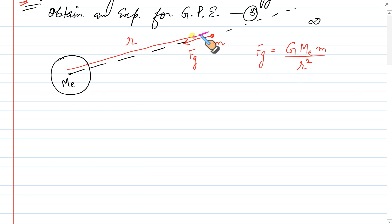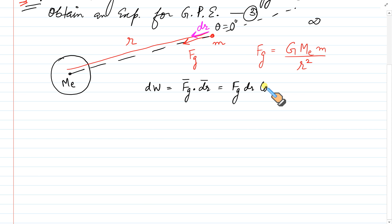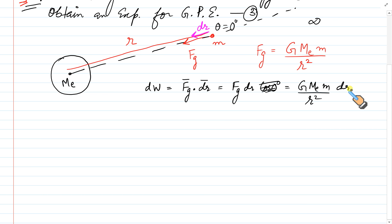اس force کی وجہ سے تھوڑا سا displacement ہوا dr، تو work done dW = Fg · dr۔ دونوں same direction میں ہیں، theta = 0°، cos 0° = 1۔ تو dW = G·Me·m / r² · dr.